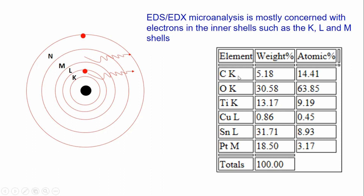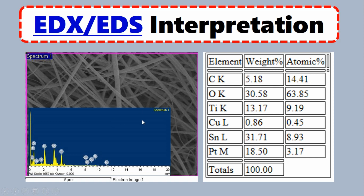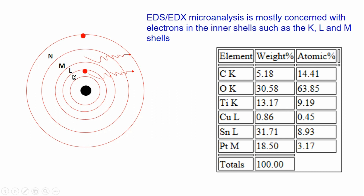EDX output tells us the K shell, carbon, and oxygen — this material is a composite of titania and another element. For titania, we also remove an electron from the K shell, and for Sn we remove an electron from the L shell. Both are high energy shells because when electrons are closer to the nucleus they contain more ionization energy — meaning we require more energy to remove that electron.